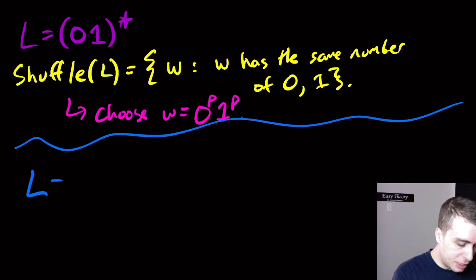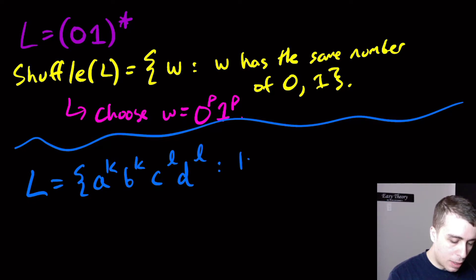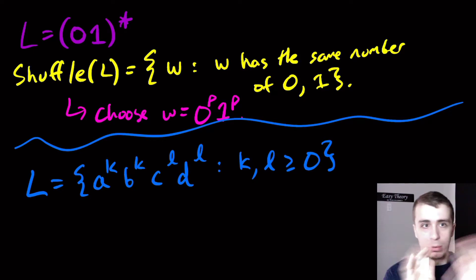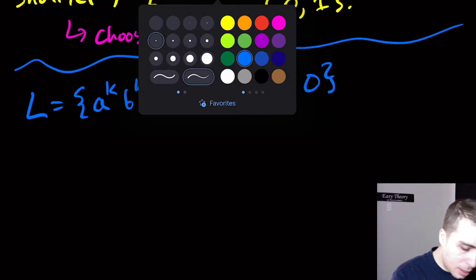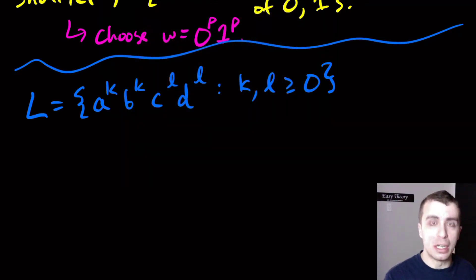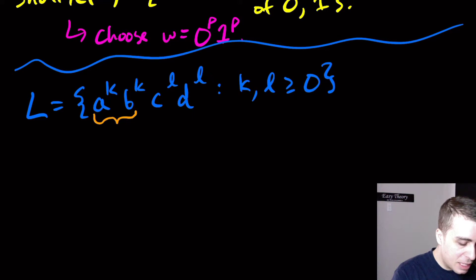I'm going to choose this language, which is going to be a to the k, b to the k, c to the l, d to the l, where k and l are at least 0. k and l are just arbitrary integers here. I got to show you that this actually is context-free. The idea is to have a variable make this part and then a different variable make this part.